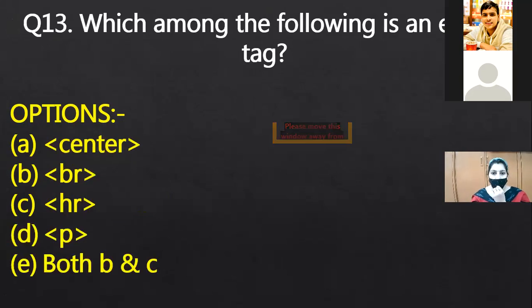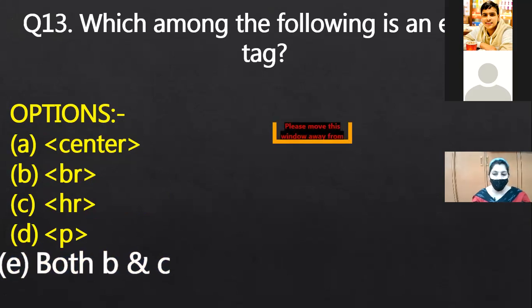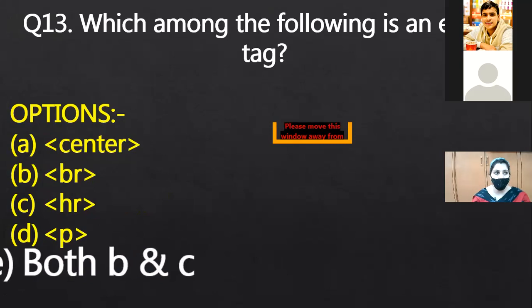Which among the following is an empty tag? Both B and C, HR and BR. Line break and horizontal rule. Center or P tag.